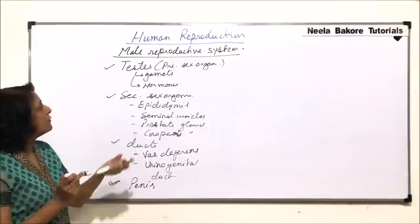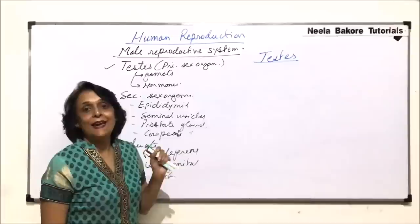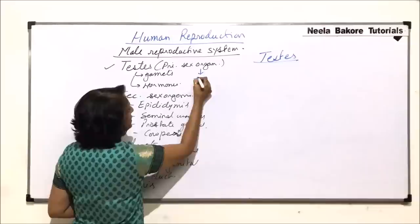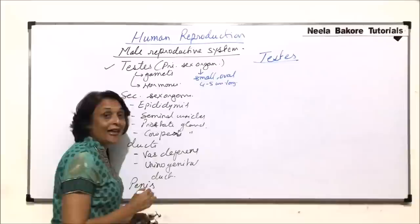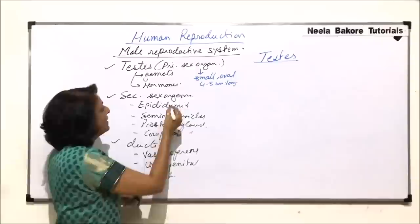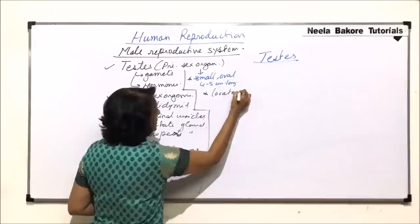When we talk about this primary sex organ, they are in pairs — small oval structures, approximately 4 to 5 centimeters long. They are located outside the abdominal cavity in the scrotal sac, located in the scrotum.